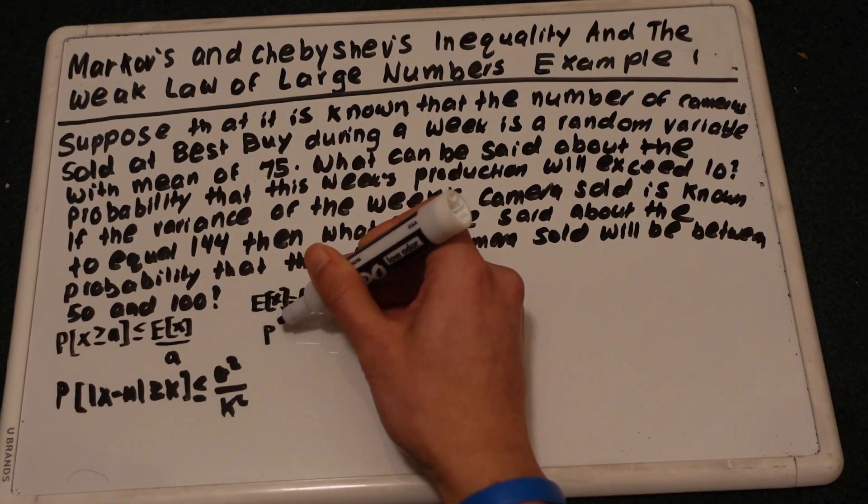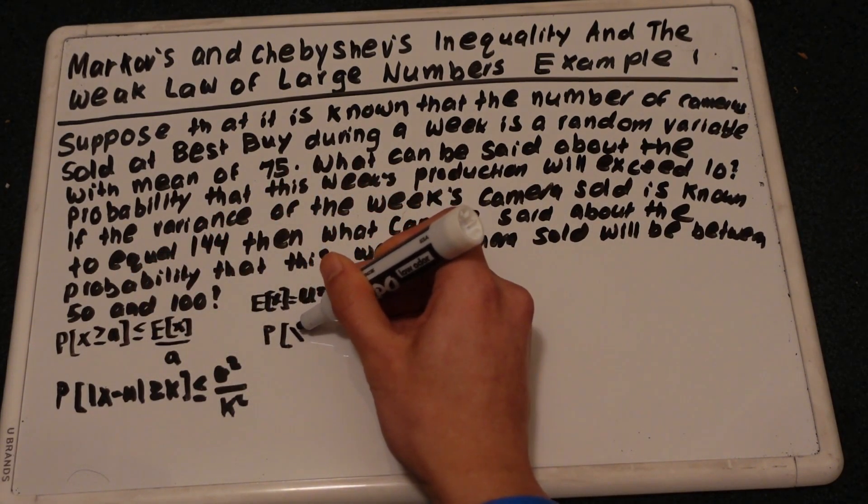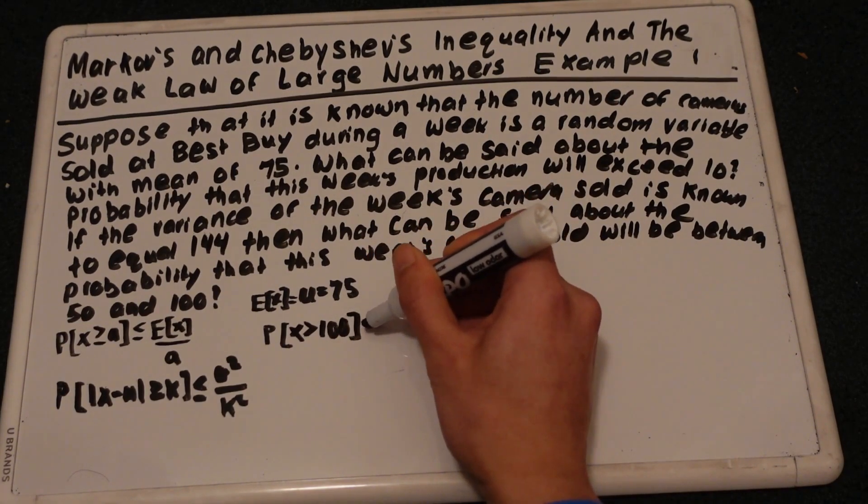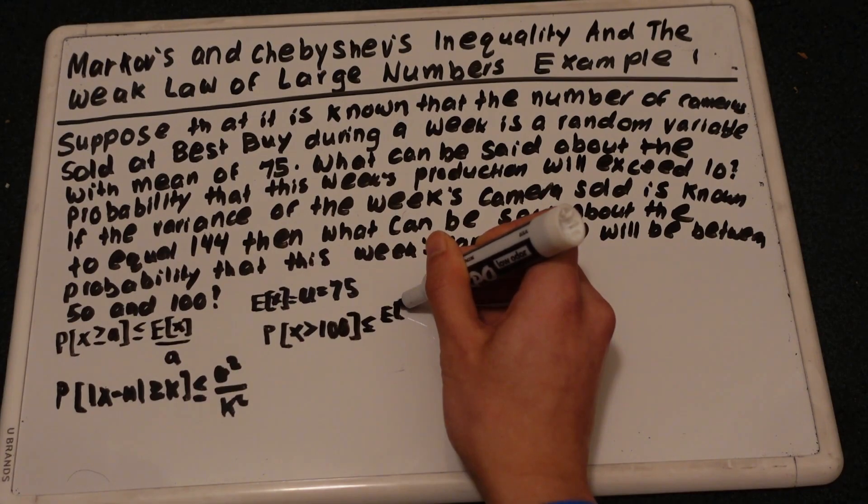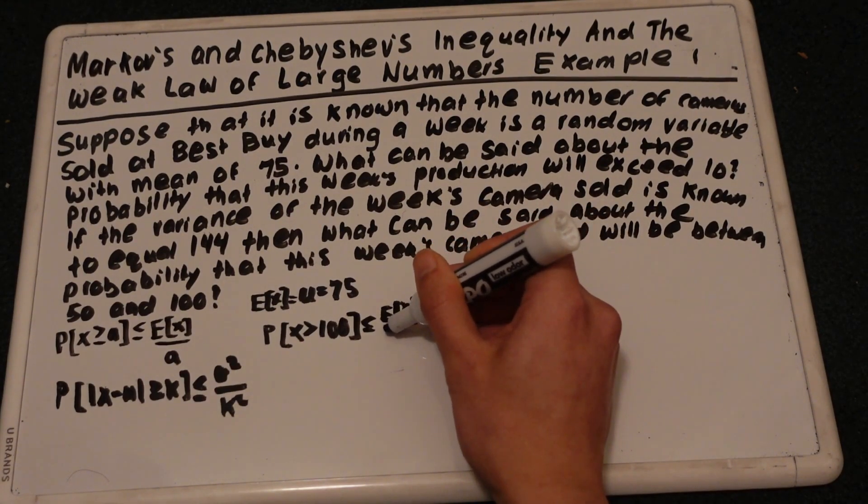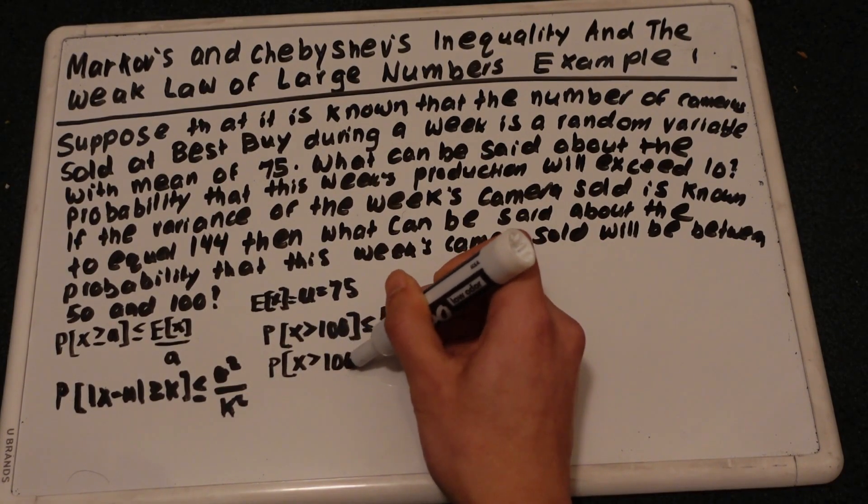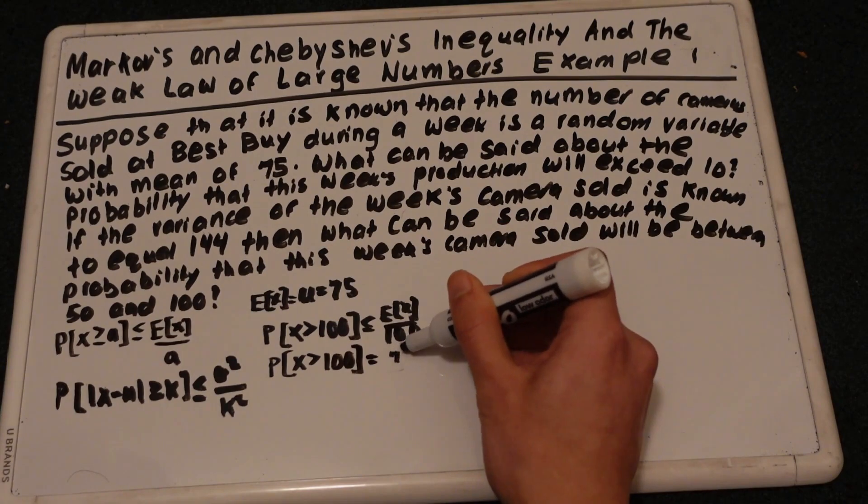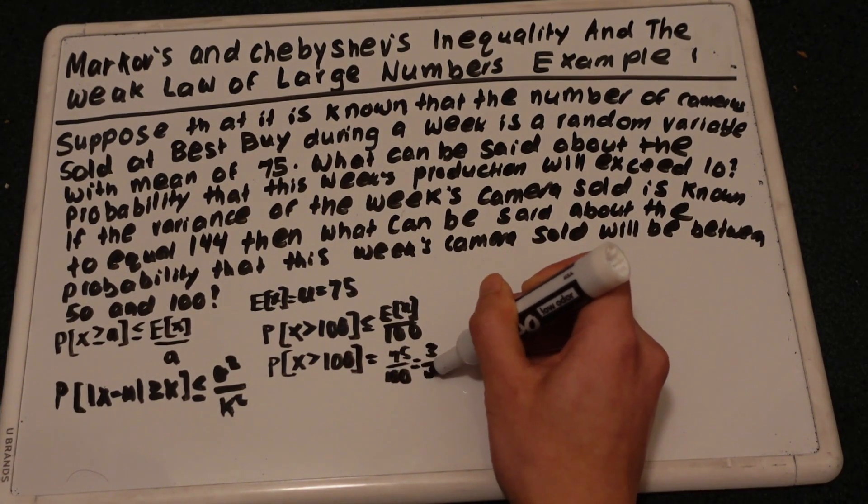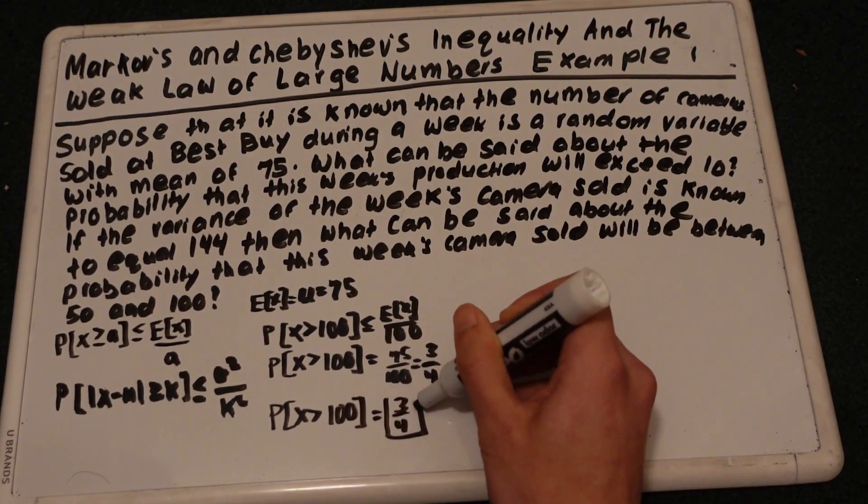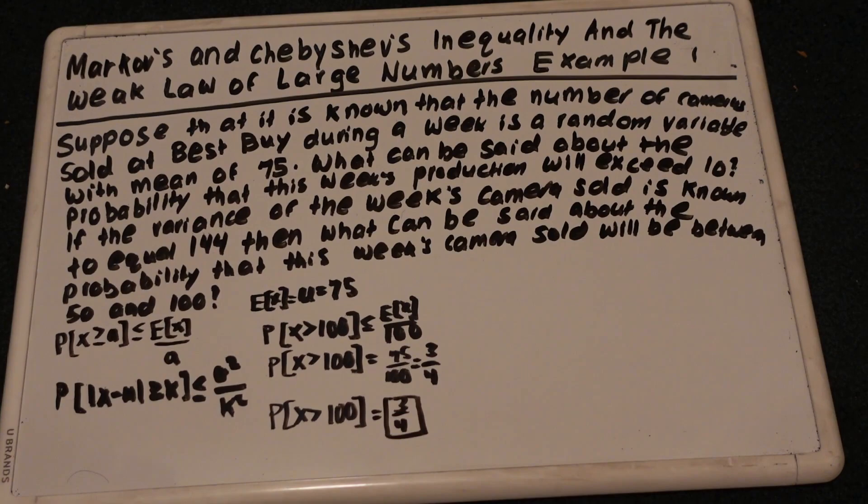So using Markov inequality, that will just be 75 over 100. So the probability that this week's production will exceed 10 at most is 3 fourths, in other words, 75%.